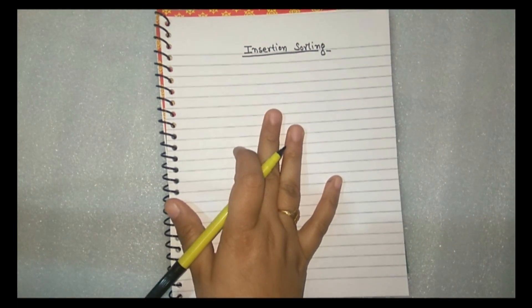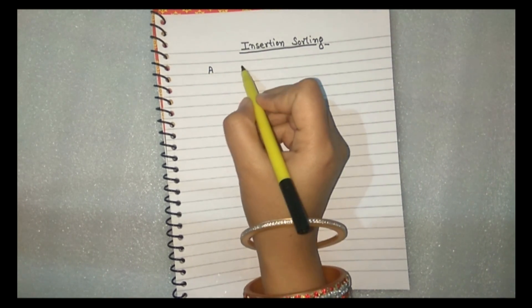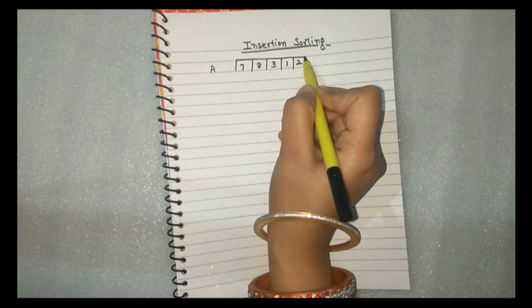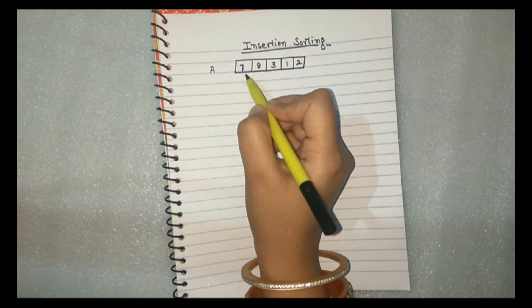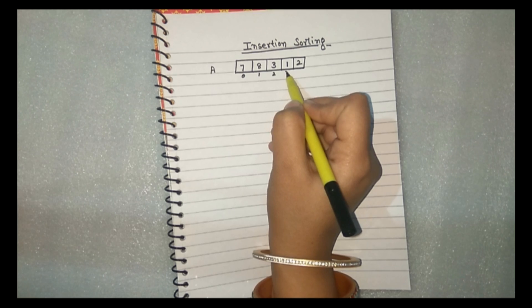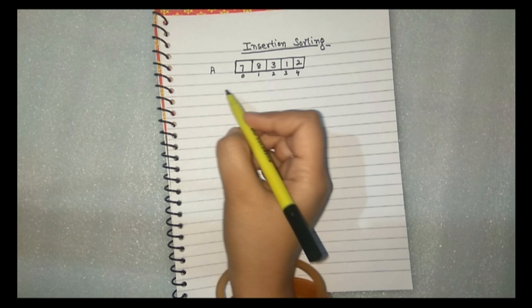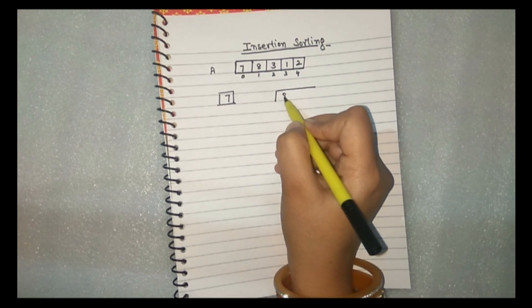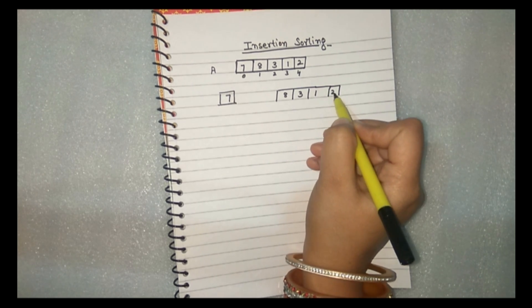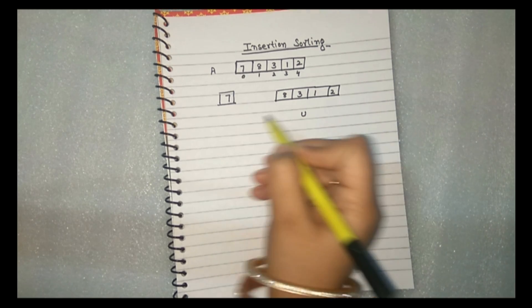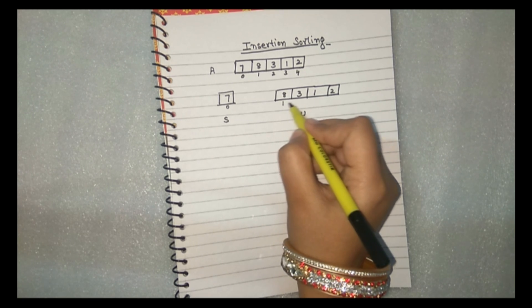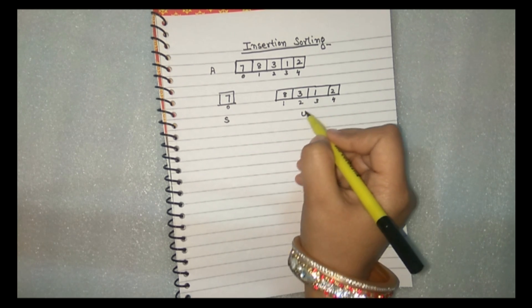Let's take an example. Suppose we have an array A with elements 7, 8, 3, 1, and 2 — a five-element array at index positions 0, 1, 2, 3, and 4. The first element is taken in the sorted list. So 7 at index 0 is the sorted sublist, and the remaining elements 8, 3, 1, and 2 from index 1 to index 4 are in the unsorted list.